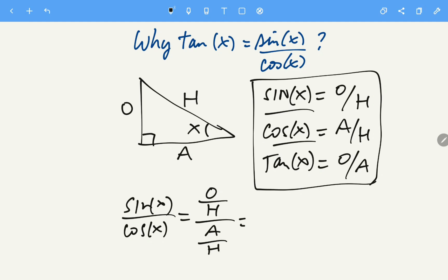So using the properties of fractions, we can simplify opposite over hypotenuse times hypotenuse over adjacent. So we cancel the hypotenuse and we have opposite divided by adjacent, which equals tangent of x.